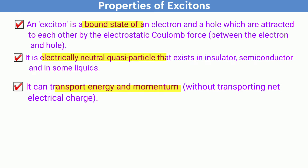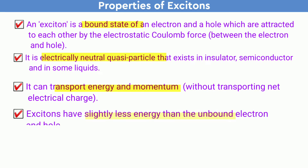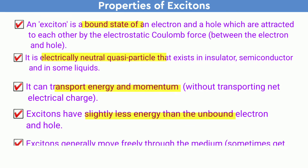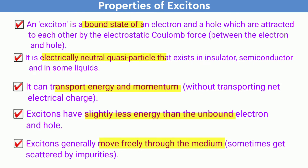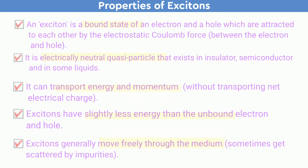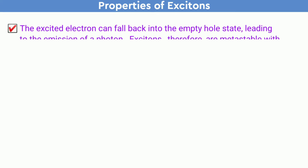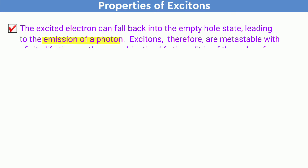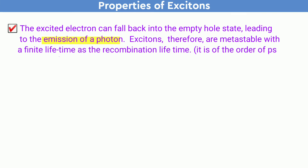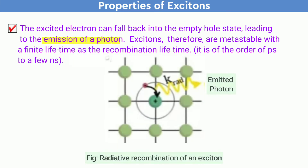It can transport energy and momentum without transporting net electrical charge. Excitons have slightly less energy than an unbound electron and hole. Excitons generally move freely through the medium, sometimes getting scattered by impurities. The excited electron can fall back into the empty hole state, leading to the emission of a photon.